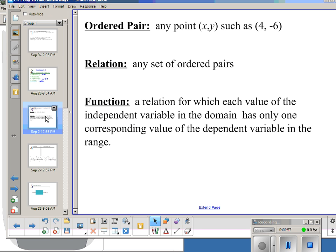One thing you need to know, we would assume that you know what an ordered pair is. It's any point (x, y), and you should know that the x comes first and the y is second, and that x is my independent variable and y is my dependent variable. In other words, input-output, independent, dependent. So a relation is any set of ordered pairs.